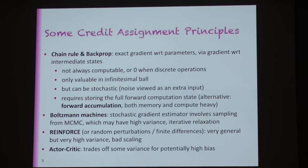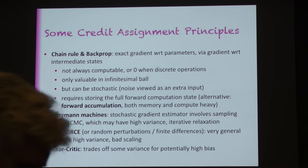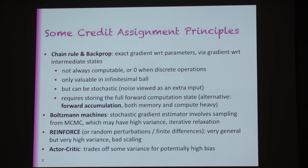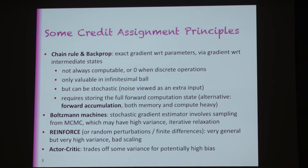Let me focus on the main topic here and talk more generally first about credit assignment principles, which we find in neural learning. The one that most of you are aware of is backprop, which is an application — a particular form of application of the chain rule — which gives us exact gradients with respect to parameters by getting gradients through intermediate states. But there are some issues with backprop that motivate alternative explorations.